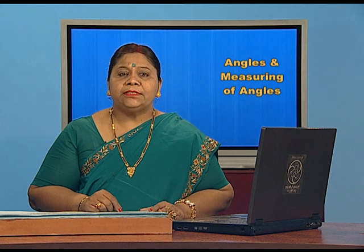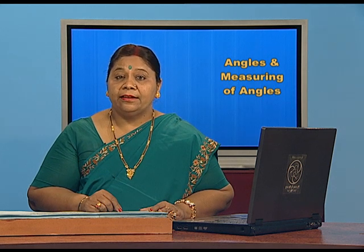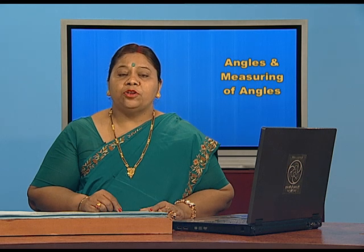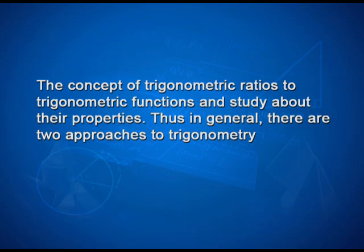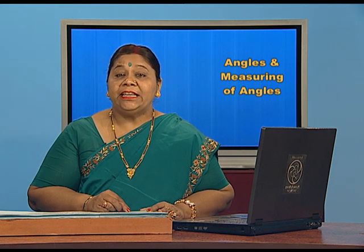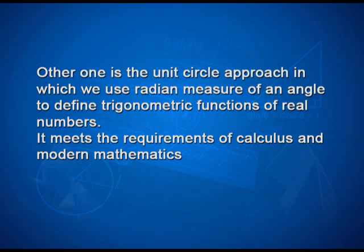In earlier classes, we have studied the trigonometric ratios of acute angles as the ratio of the sides of a right angle triangle. We have also studied the trigonometric identities and application of trigonometric ratios in solving problems related to heights and distances. In this chapter, we will generalize the concept of trigonometric ratios to trigonometric functions and study their properties. In general, there are two approaches to trigonometry: one centers around the study of triangles, which we have already studied in class 10; the other is the unit circle approach, in which we use radian measure of an angle to define trigonometric functions of real numbers. It meets the requirements of calculus and modern mathematics.